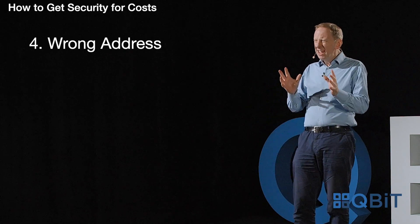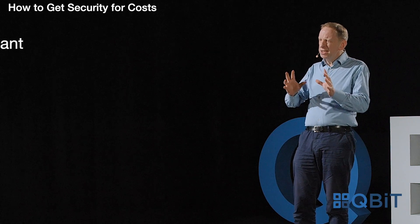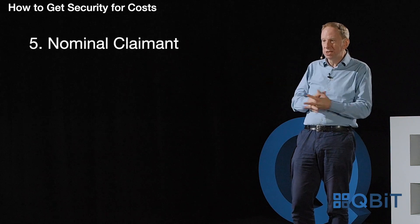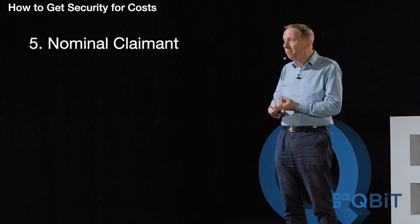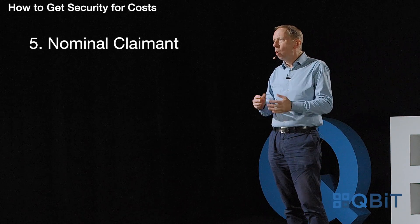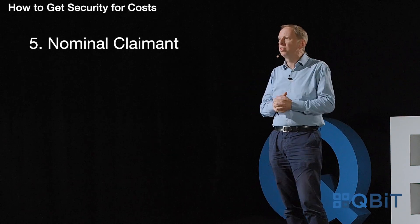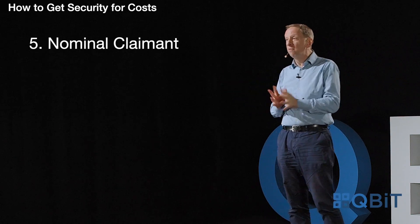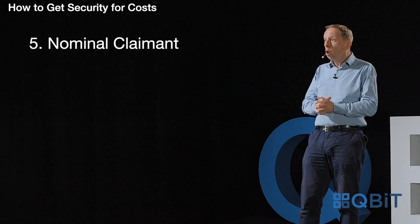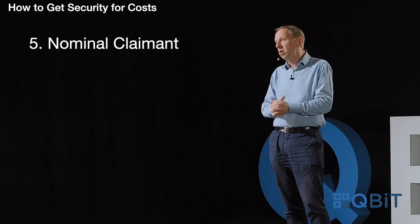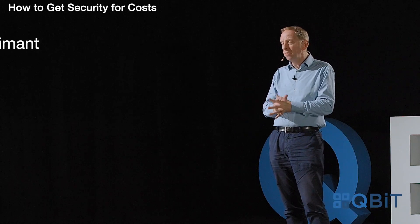The fifth is where there's another party lurking in the background controlling the litigation — a nominal claimant, or where the claimant has assigned a claim to a third party to avoid costs, or where somebody else is funding litigation for a share of the winnings.